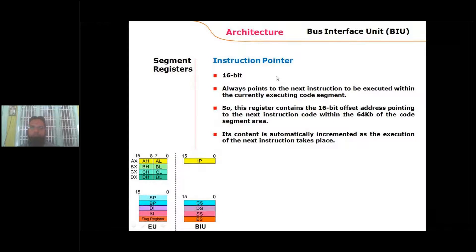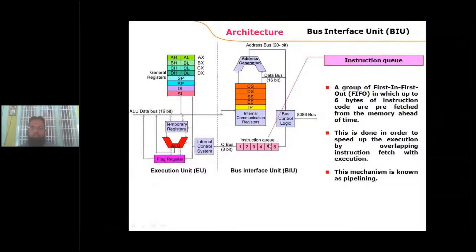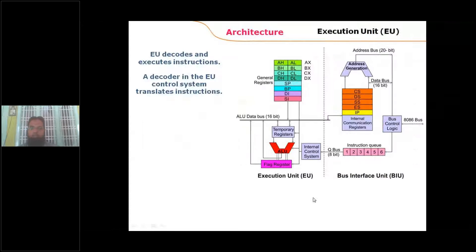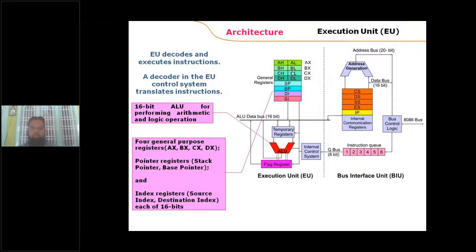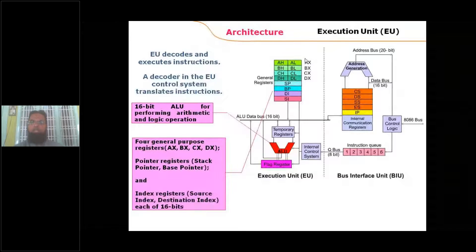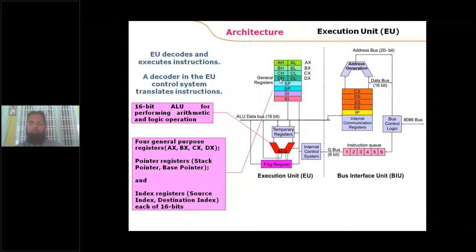The instruction pointer (IP) functions as the program counter. The six-byte instruction stream buffer (instruction queue) stores prefetched instructions. As the processor executes one instruction, the next is fetched and stored here. The EU contains a decoder for translating instructions, an ALU, and general-purpose registers AX, BX, CX, and DX — all 16-bit registers that can also be used as two separate 8-bit registers (e.g., AL/AH, BL/BH, CL/CH, DL/DH).